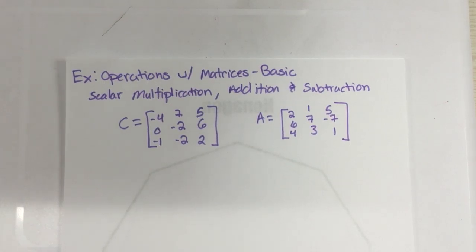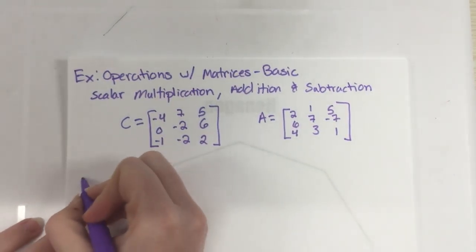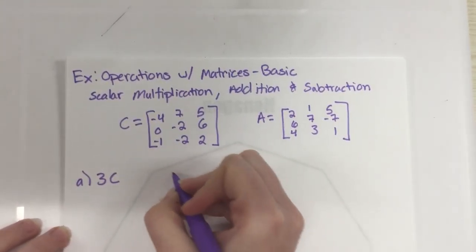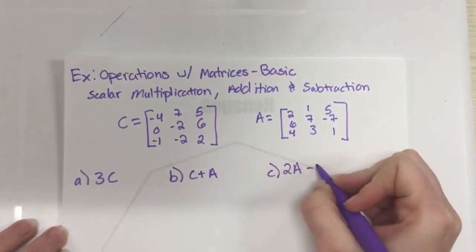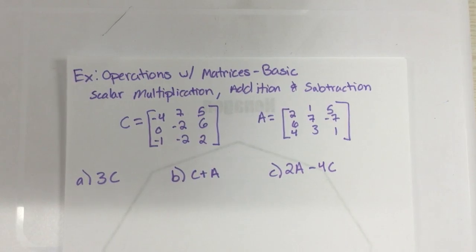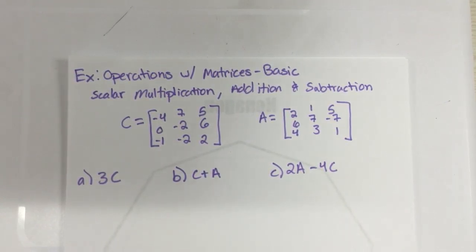And I'm just going to perform three different operations. So the first thing we want to do is we want to find 3C. And the second one we want to do is C plus A. And the third one we want to do is 2A minus 4C. So we're just going to make it harder each time.